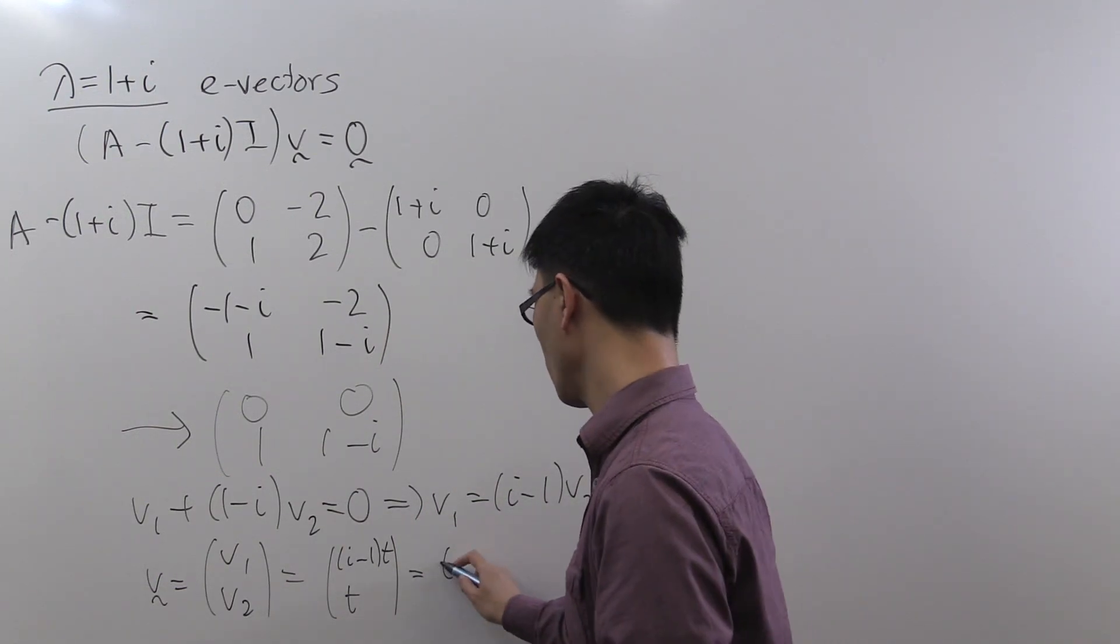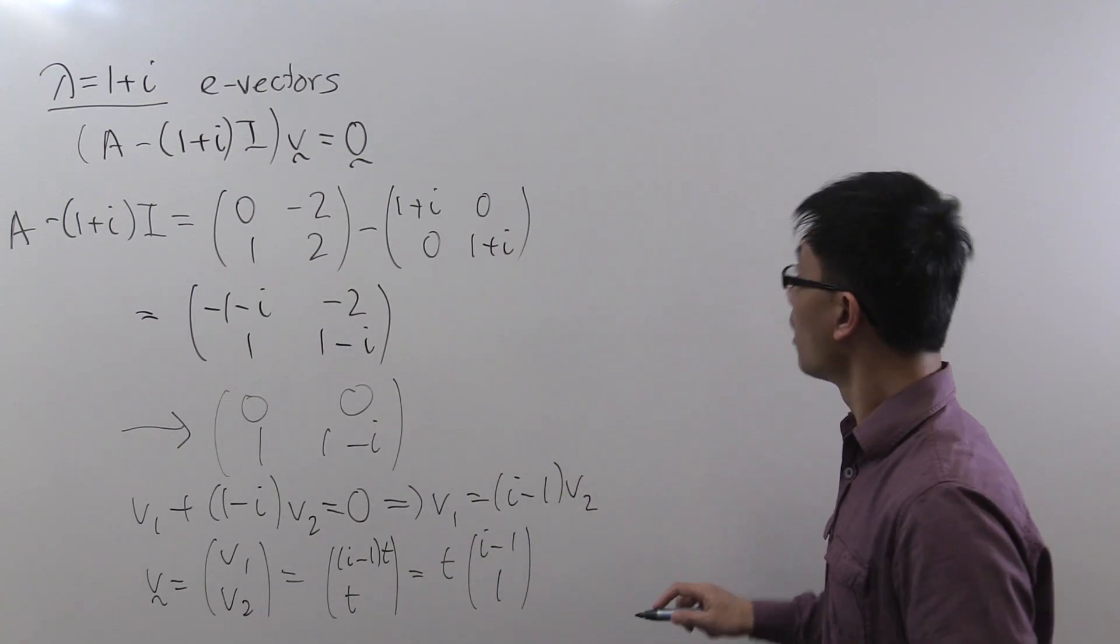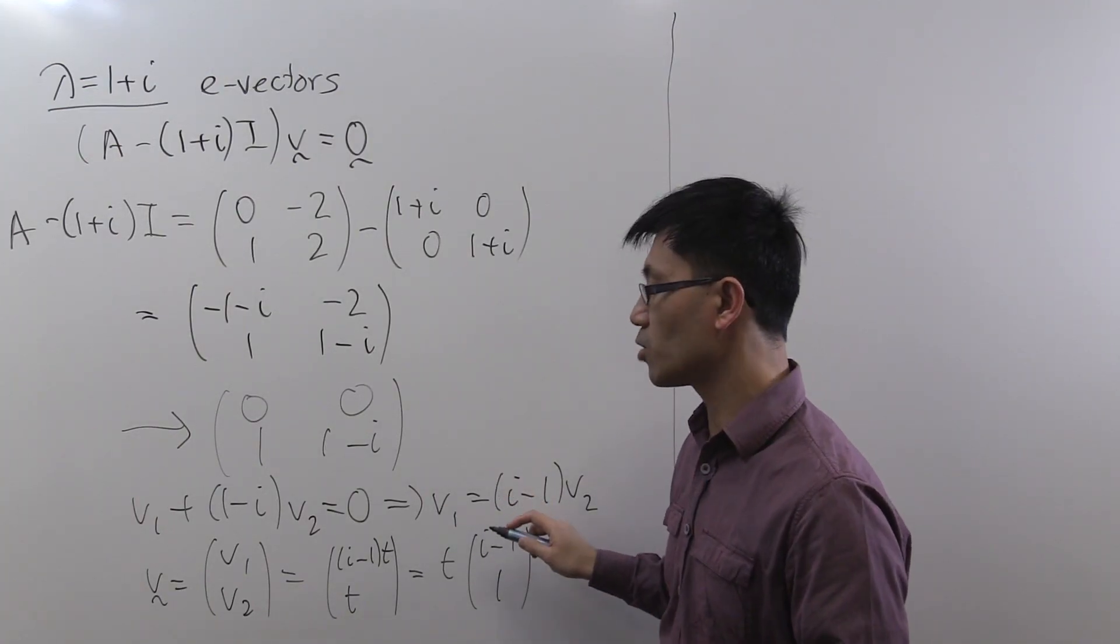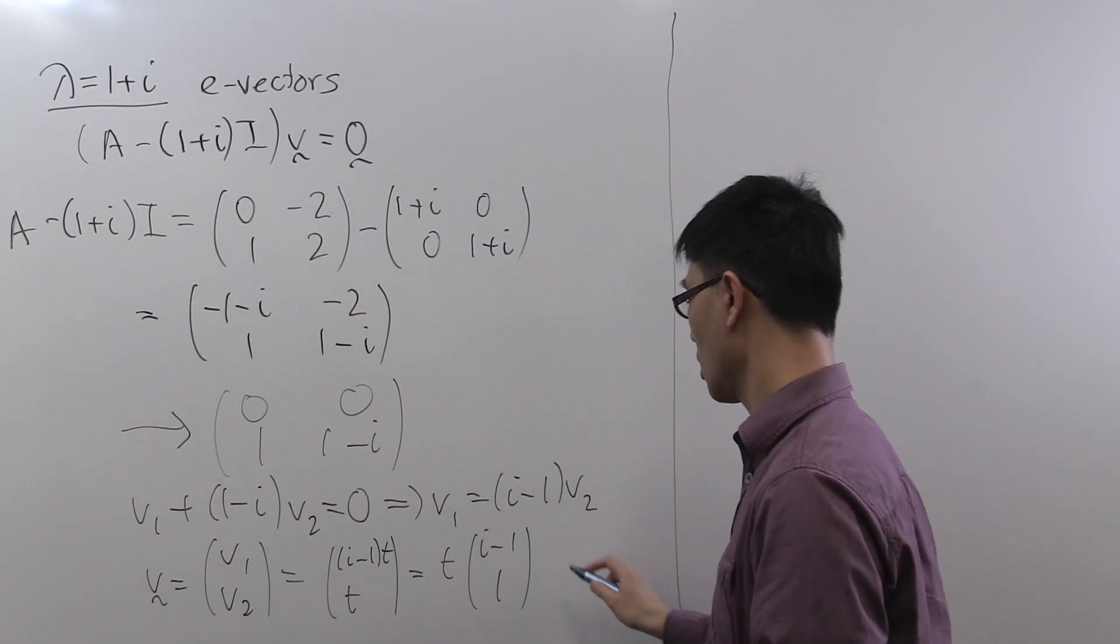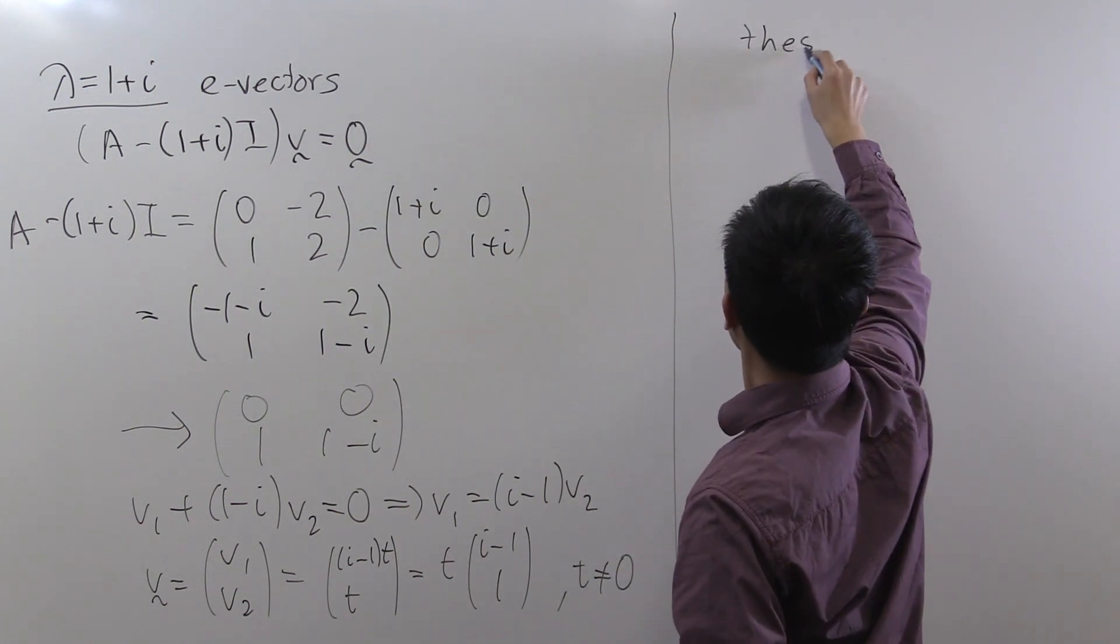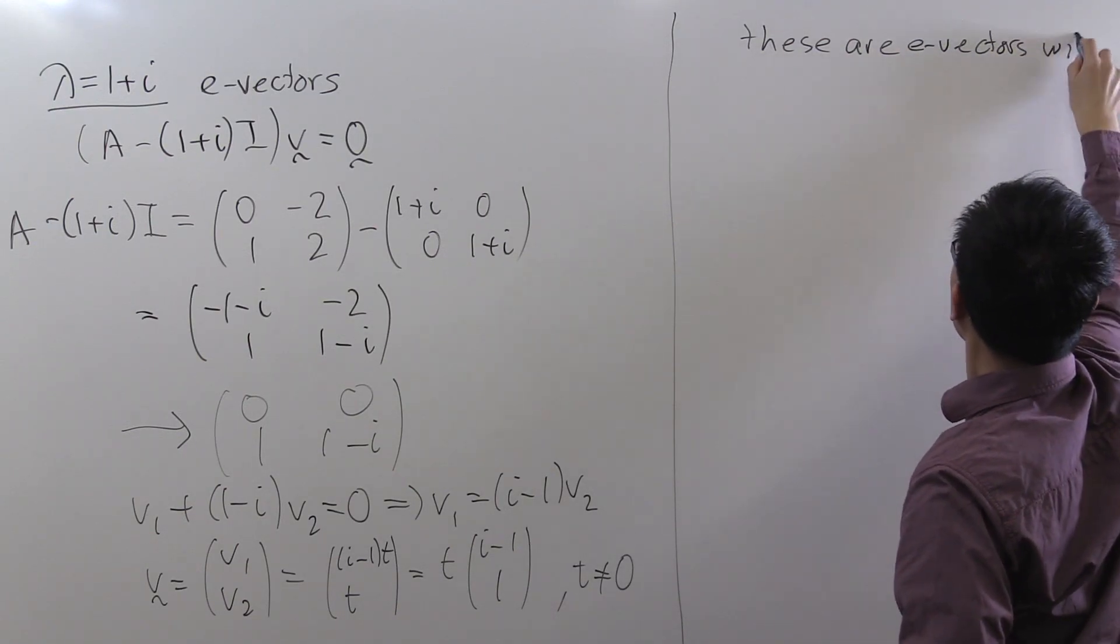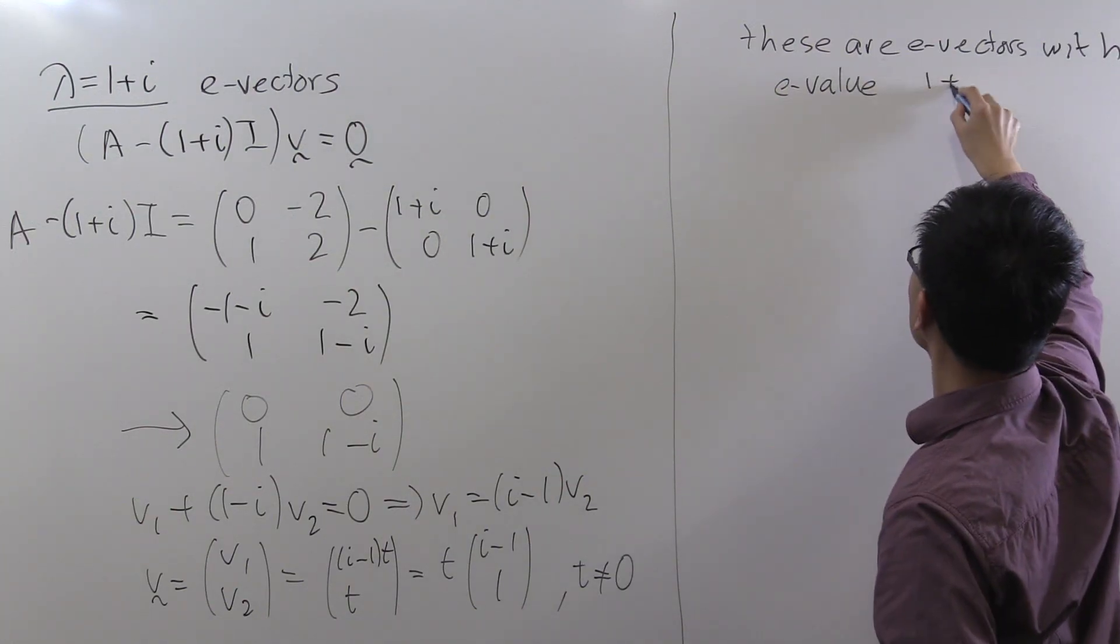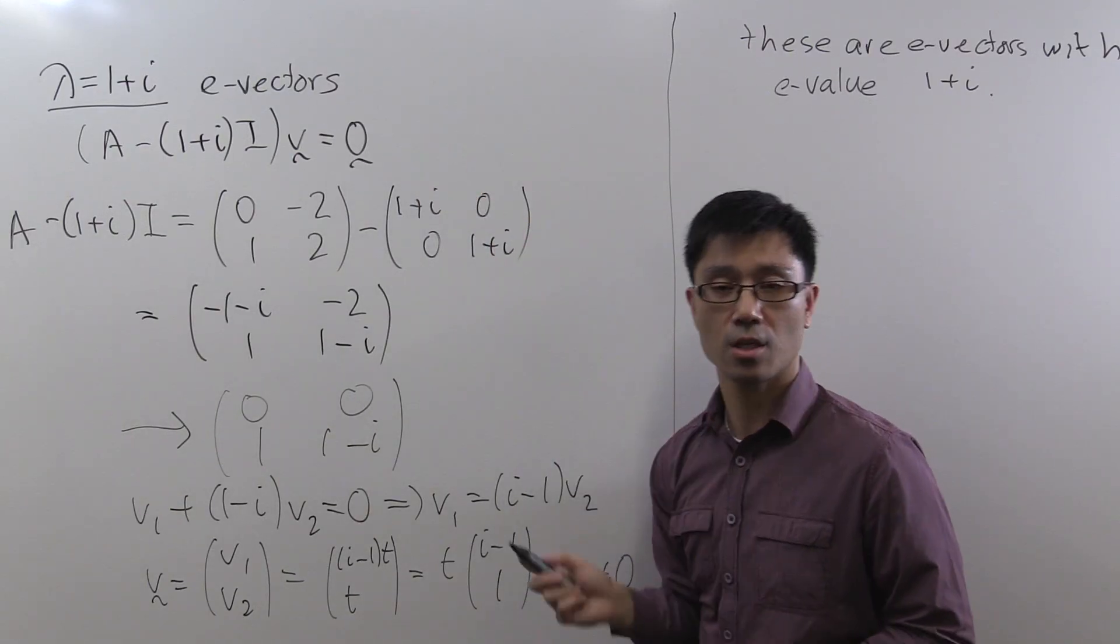Let's pull out the t. And the non-zero vector solutions are going to be the eigenvectors with the eigenvalue of lambda equals 1 plus i. So for t does not equal 0, these are eigenvectors with eigenvalue 1 plus i. So that's the first of the two eigenvalues covered.